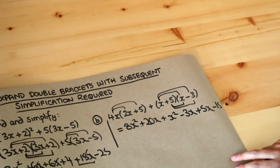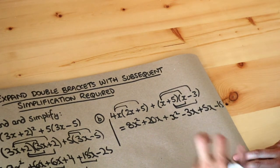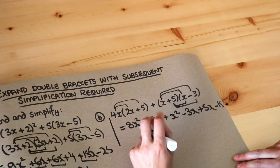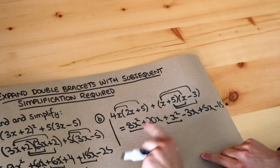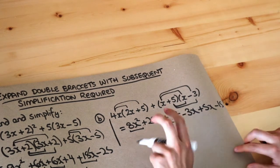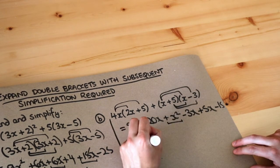So we've done the expandy bit. We now need to do the simplification bit. So what x squared terms do we have? Well we've got an x squared term here, an x squared term here. 8 lots of x squared plus 1 lot of x squared is 9 lots of x squared.